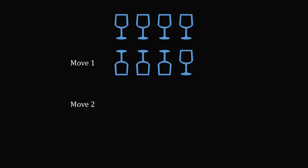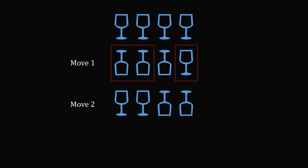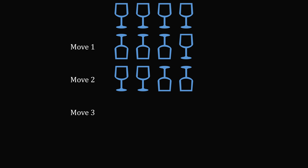So instead, we're going to do another possibility — we'll turn two glasses that are down and the one glass that is up. We could pick the first two glasses, the next two, or the first and third — either way, it doesn't matter. We pick two glasses that are down and one glass that's up. After move two, we end up with two glasses up and two glasses down. Now, we could pick two glasses that are up and one glass that's down, but that would bring us back to the state from move one — a counterproductive move.